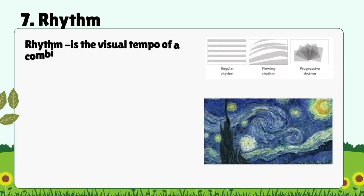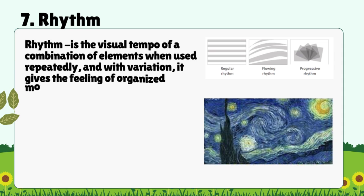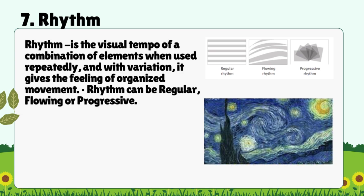7. Rhythm: Rhythm is the visual tempo of a combination of elements when used repeatedly and with variation. It gives the feeling of organized movement. A rhythm can be regular, flowing, or progressive.